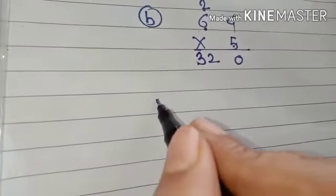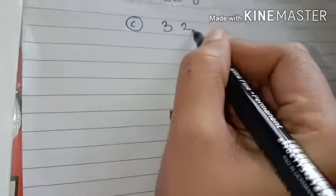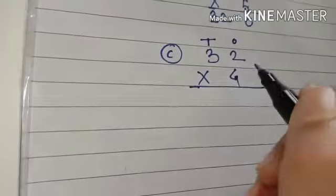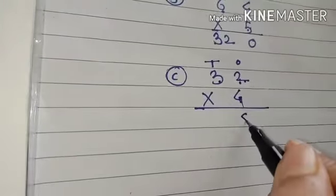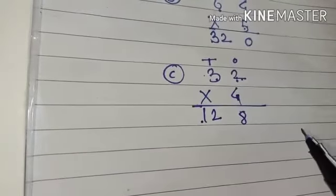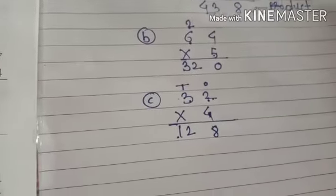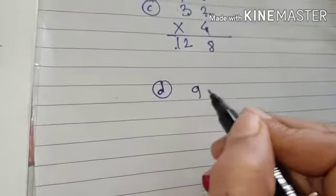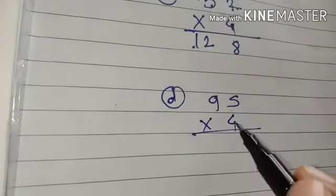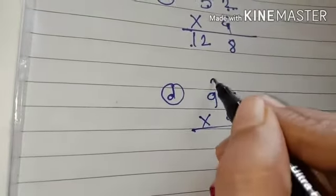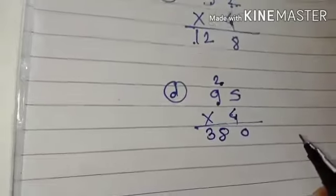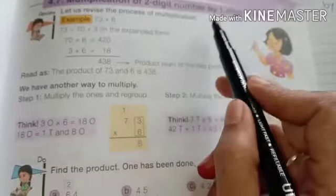Now let us, we will see 32 multiply with 4. 1's, then after 10's. 2 digit number, 1's, 10's. 4 2's are 8, 4 3's are 12, 128. This is called the multiplication of 2 digit number by 1 digit number. Again, if you 4 5's are 20, 2 carry. 4 9's are 36, 36, 37, 38. Answer is what? 380. Like this we have to solve multiplications of 2 digit number by 1 digit number.